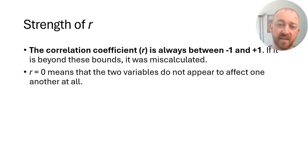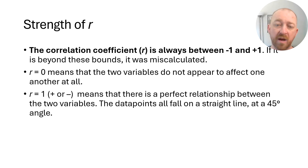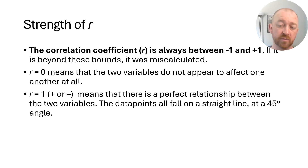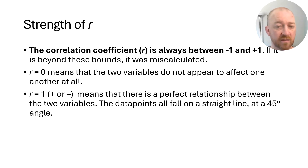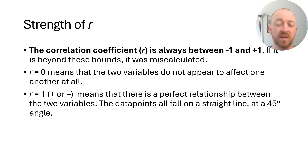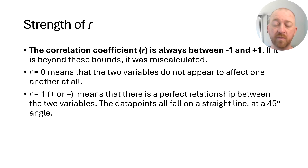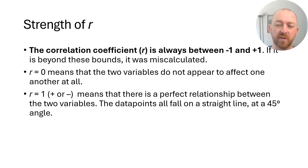In contrast, a negative 1 or positive 1 value means the variables are perfectly related. If you really had a correlation of 1, that would mean they're essentially the same variable — there's no difference whatsoever between the two. One is perfectly predictable from the other. It's of course very rare that you actually obtain an R of 1 using real data.